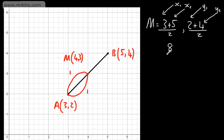So that's going to give me 8 over 2, and then we can have 6 over 2, which of course, as expected, we get the 4, 3. And that gives us the midpoint.